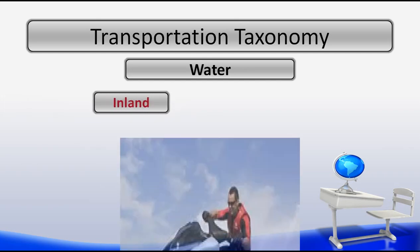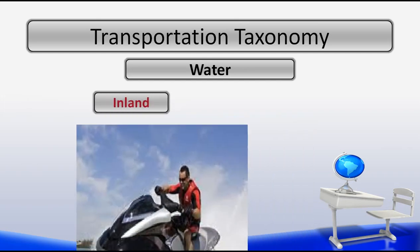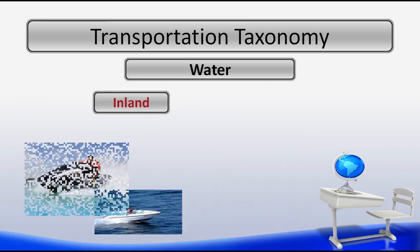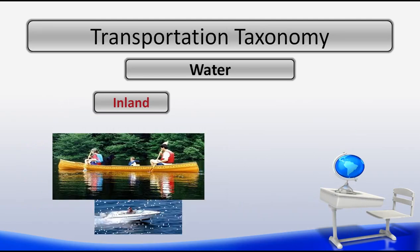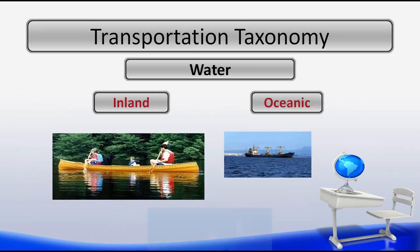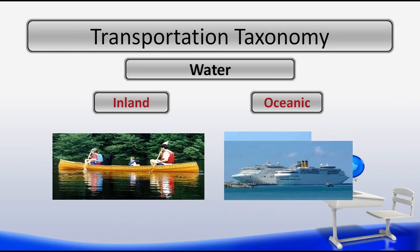Examples of water transportation based on the inland subsystem would include personal watercraft, boats, canoes, rafts, and others. Some examples of oceanic transportation would include ships, barges, submarines, surfboards, and many more. In the water environment, there are many methods of transportation that can be used in both inland and oceanic waterways.